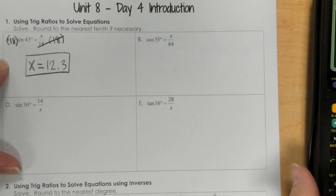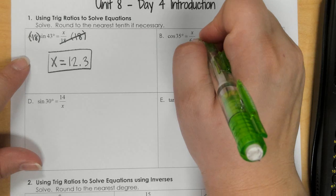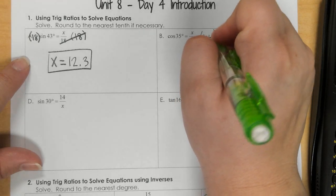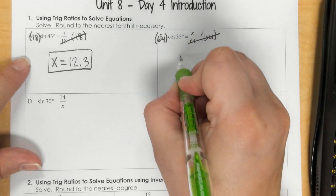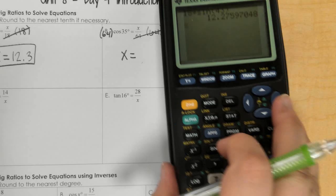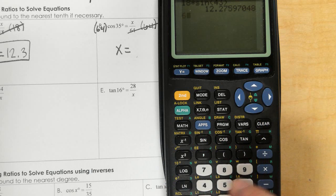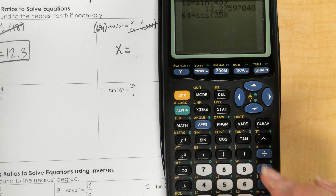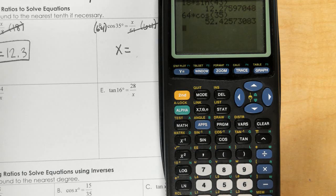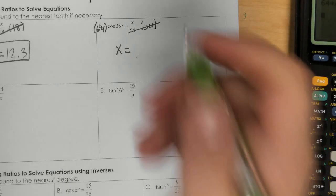Okay, in part B, I would multiply both sides by 64 since that's my denominator. And I would get 64 times cosine of 35, close the parenthesis, and I have 52.4.